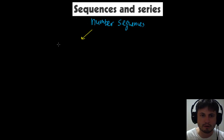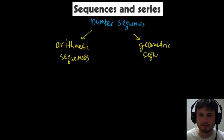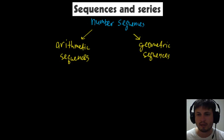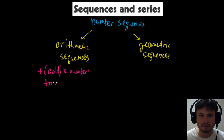Two other important terms you need to know are arithmetic sequence and geometric sequence. Don't let the names confuse you — they have nothing to do with geometry or arithmetic as subjects; these are just names. In a nutshell, an arithmetic sequence is where you add the same number each time to make a pattern.